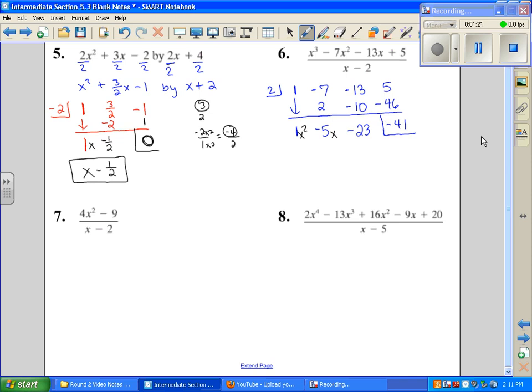So this is, sometimes in Course Compass, it's written as one x squared minus five x minus twenty-three, and it'll say remainder, and you would say negative forty-one. Okay, sometimes Course Compass asks for it like this, when it has the word remainder.